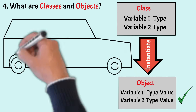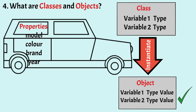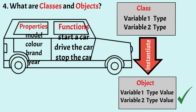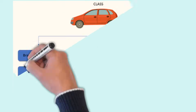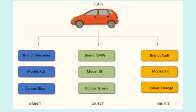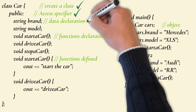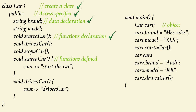For example, let's take a car. It has properties such as model, color, brand, year, etc., and it also has different functions such as to start a car, drive the car, stop the car, etc. This can be represented in a program with the help of objects. Now let's take an example. We have created a class called car, given the access specifier as public, declared data members and member functions, and defined member functions in the class. Then in the main function, we have created an object named car1 of the car class, assigned values to data members, and called the member functions.